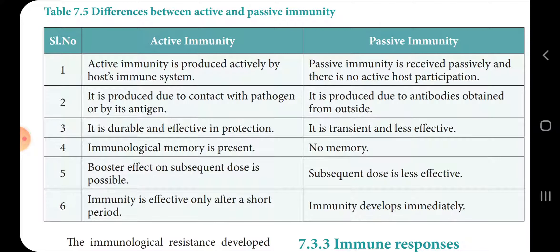Active immunity is produced actively by the host immune system. Passive immunity is received passively, and there is no active participation of the host.